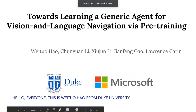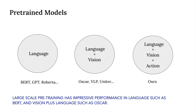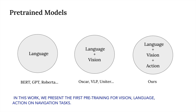Hello everyone, this is Wei-Tuo Hao from Duke University. Large-scale pre-training has shown impressive performance in language, such as BERT, and vision-plus-language, such as OSCAR. In this work, we present the first pre-training for vision-language-action, or navigation tasks.